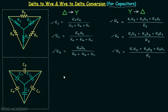Now we will move on to the next case in which we have a delta network of capacitors and we want to have the Y network of capacitors. To write down the formula directly, we will refer this set of formulas, and the only thing you have to do is to replace resistance by 1 over capacitance, that is R will be equal to 1 over C.